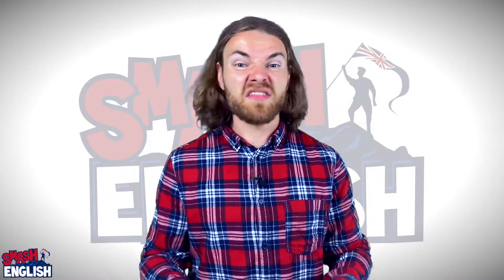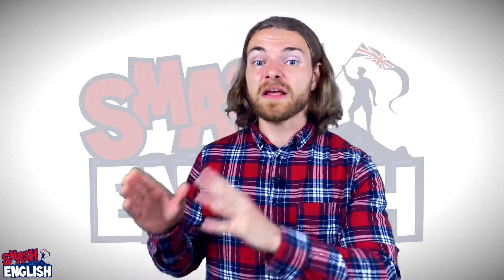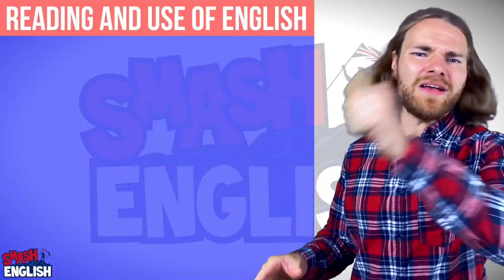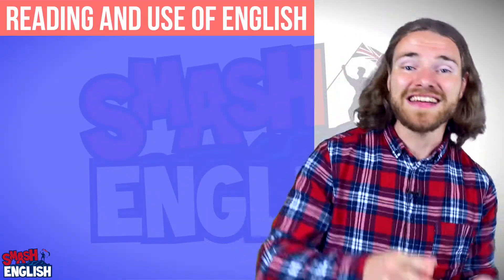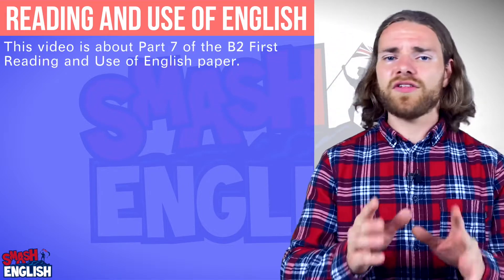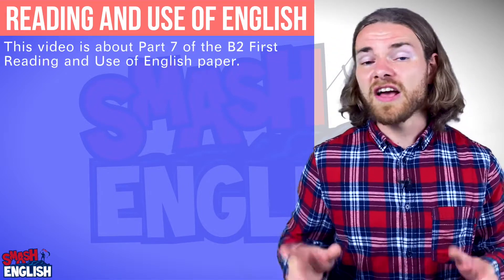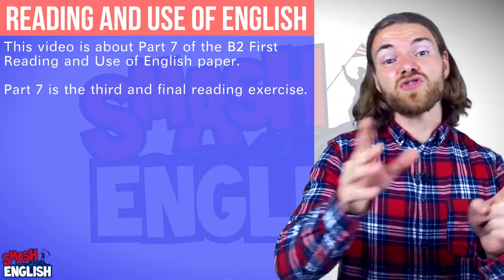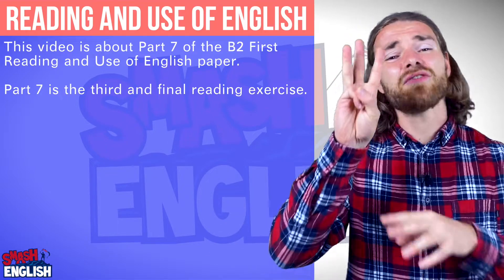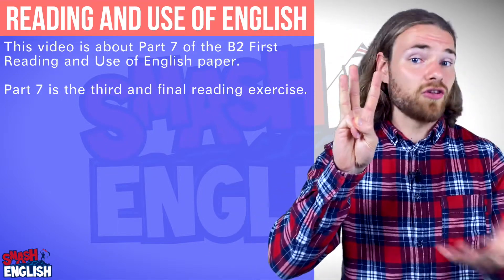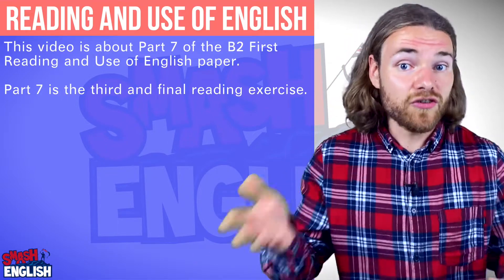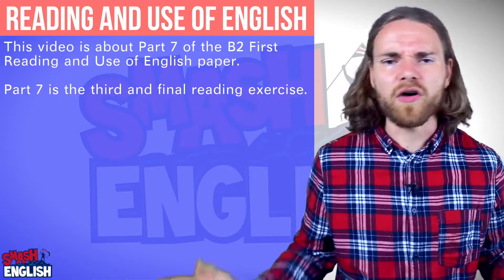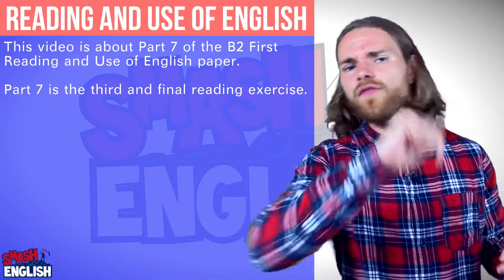Firstly, this is not actually part 3 of the Reading Paper, and that's because there is no Reading Paper. For the B2 First Cambridge Exam there is a Reading and Use of English Paper, and this video is about Part 7. Part 7 of the Reading and Use of English Paper is the third and final reading exercise that you will need to do, and so we will call it part 3 of the Reading Paper.